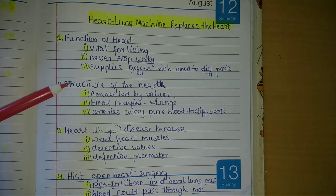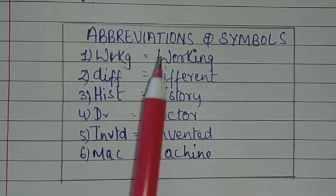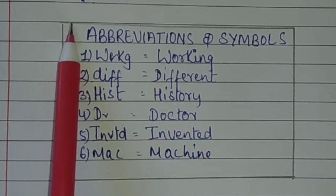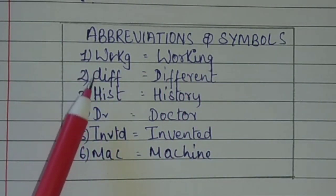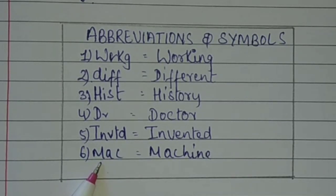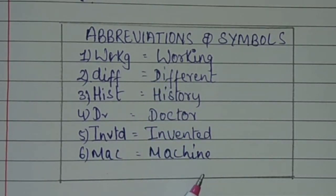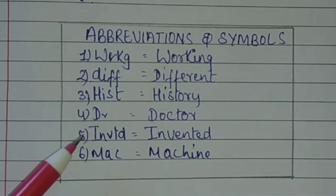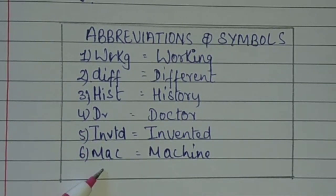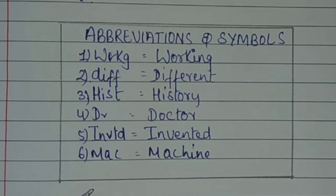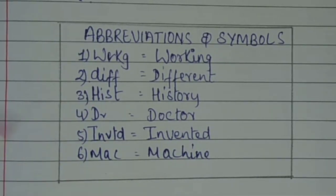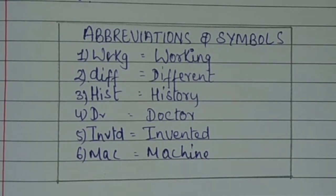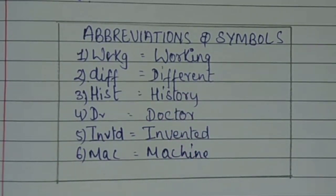For abbreviations and symbols, that should be your heading, written within a box. Write the abbreviated words on one side and the full words on the other. The main abbreviations used were: working, different, history, doctor, invented, and machine. Minor abbreviations like 'and' and 'etc.' can be excluded — focus on the main ones.